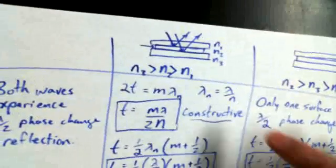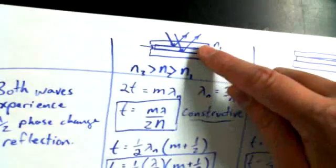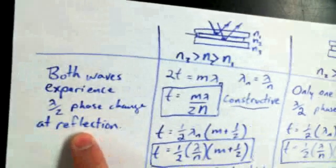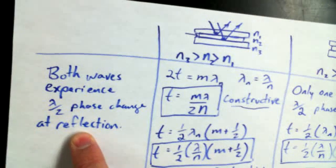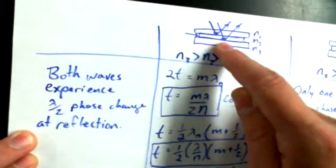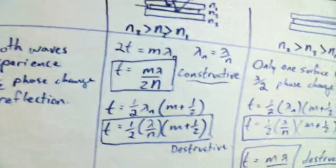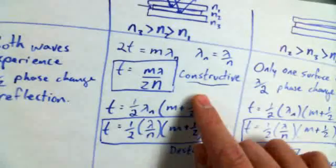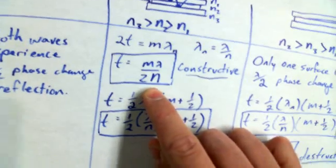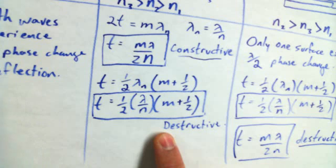So in a scenario where the materials are getting progressively more optically dense, you're going to get two half-wavelength phase shifts. And in that case, if you're getting an inversion at both interfaces when you have a wedged material, you're going to get constructive interference when the thickness is such, and you'll get destructive interference when the thickness is such.